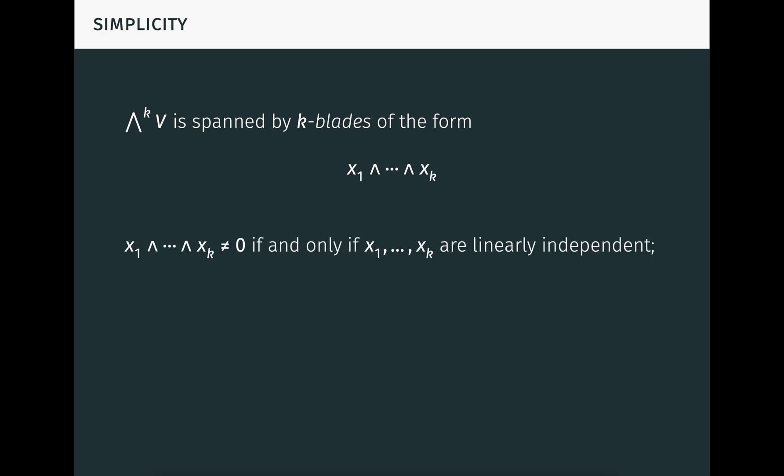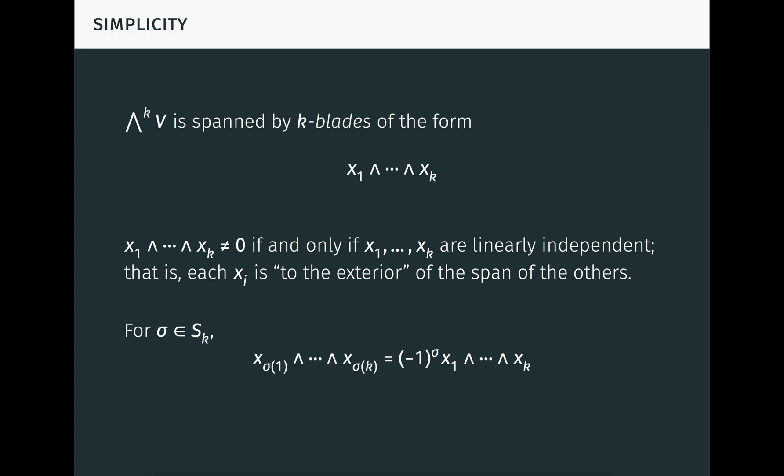Blades have a number of important properties. For example, a blade of vectors is non-zero if and only if the vectors are linearly independent — that is, if and only if each vector is to the exterior of the span of the others. This is actually why the exterior product has its name. To see why this result is true, first note that if one vector is a linear combination of the others, then if we substitute that linear combination into the exterior product and expand using multilinearity, all the resulting terms are zero by the alternating property, so the product is zero. Conversely, if the product is zero, then by the universal property any alternating multilinear map defined on the span of the vectors must be zero. For example, a determinant function on the span must be zero, which implies that the vectors are linearly dependent.